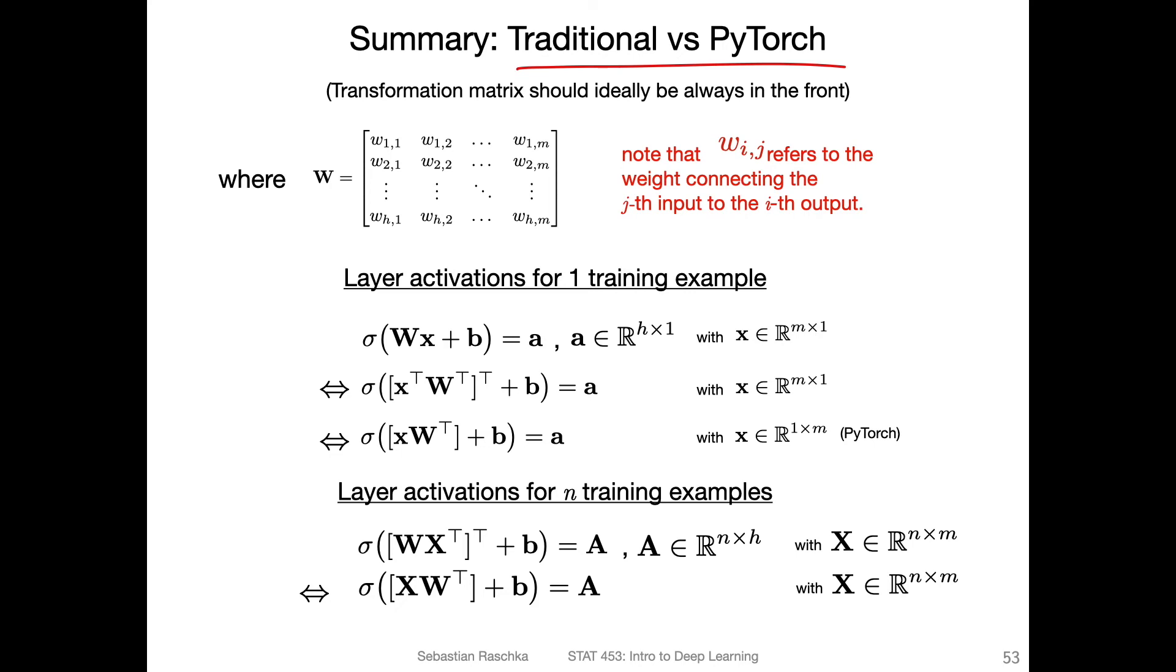Just to summarize traditional versus PyTorch conventions. There are multiple ways we can compute this linear transformation. We can have this weight matrix up front. This would result then in h times 1 dimensional vector, when x is a feature vector m times 1 dimensional. This is the same as writing it like this, same thing.